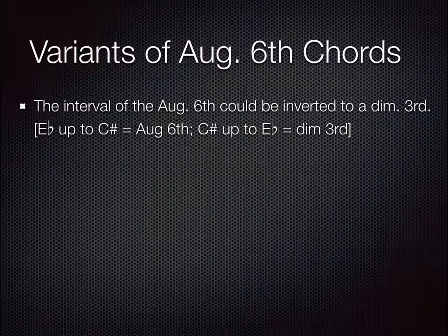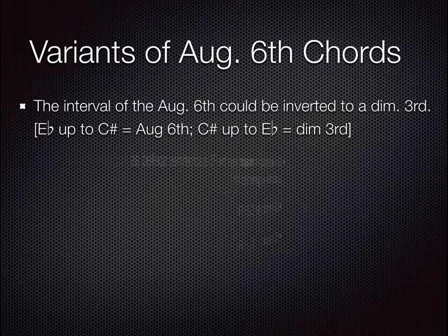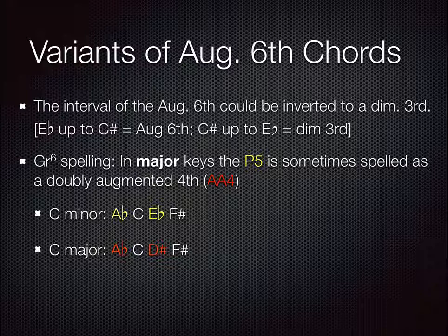If the augmented sixth is inverted into a diminished third, the resolution is the same: sharp goes up, flat goes down. In the German sixth, the note a perfect fifth above the bass becomes the third of the one-six-four chord. In C minor, the E-flat would stay E-flat in the one-six-four chord; but in C major, the one-six-four has an E natural. To avoid E-flat going to E natural, the E-flat is re-spelled as a D-sharp to resolve up a half step to E natural. See figure 6.18 in the book.